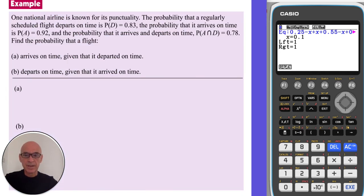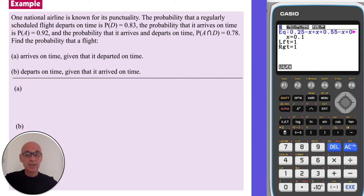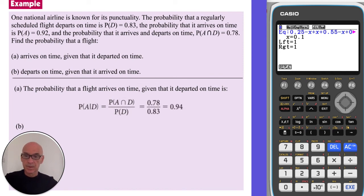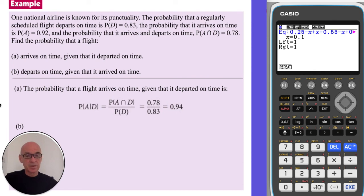In this last question, event D is the probability that the flight departs on time and event A is the probability that the flight arrives on time. We're asked to calculate the probability that a flight arrives on time given that it departed on time. The required probability is A given D, which equals the intersection of A and D divided by D. The probability that it arrives and departs on time is 0.78 and the probability that it departs on time is 0.83, giving a result of 0.94.